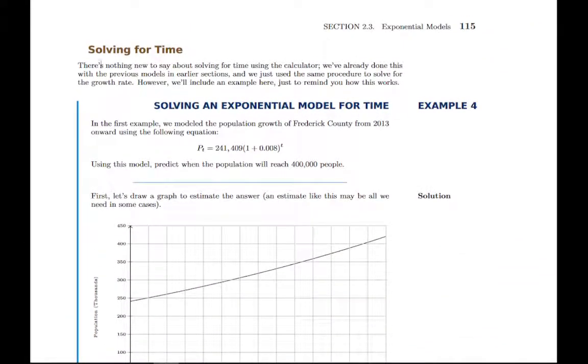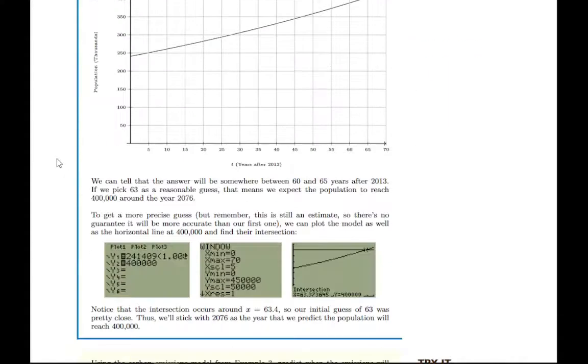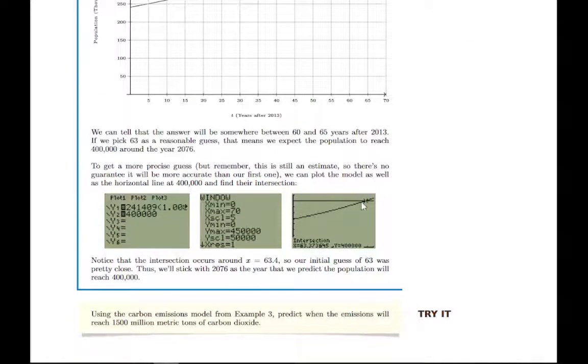And then, a familiar process where we are solving for a time that you reach a certain amount. We've done this with linear models and quadratic models already in this chapter. So we're going to do the same thing here where you graph and find the intersection. Go through this example and make sure that makes sense to you and that you can get the same answers. But the process is just the same. There's nothing really new there.